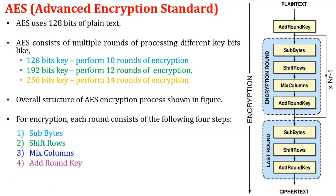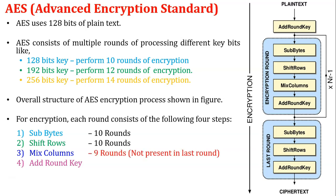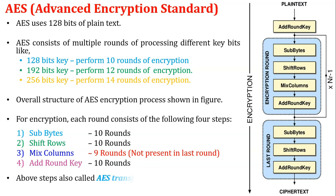Assuming we are using a 128-bit key, AES performs 10 rounds of encryption. So substitution bytes performs 10 rounds, shift rows performs 10 rounds, mix columns performs 9 rounds — because mix column is not present in the last round — and add round key performs 10 rounds. These four steps are called AES transformation functions.